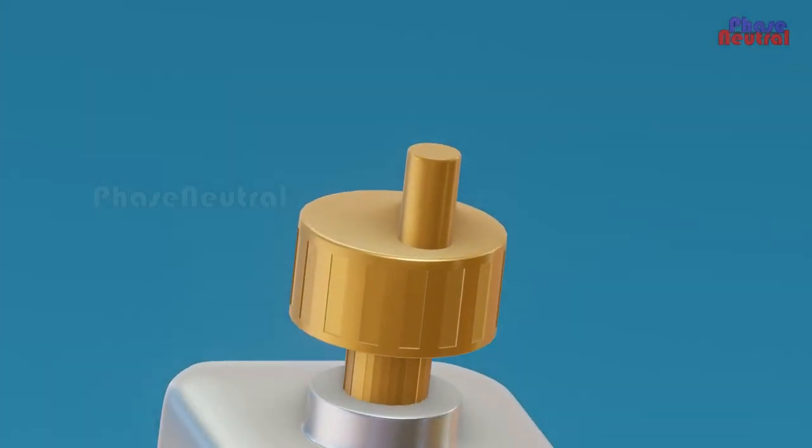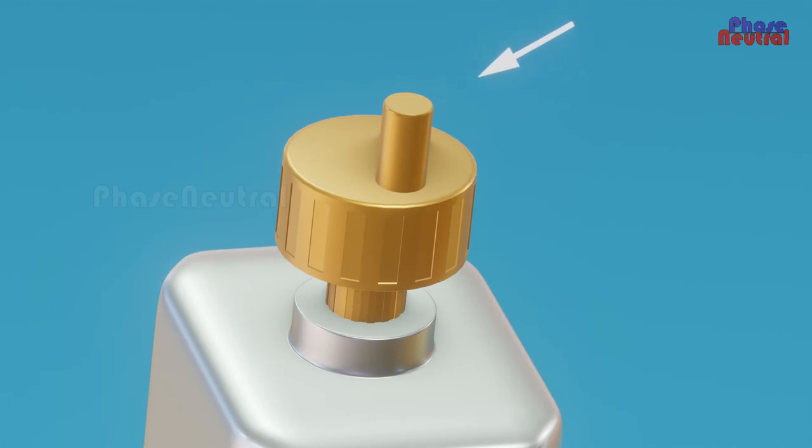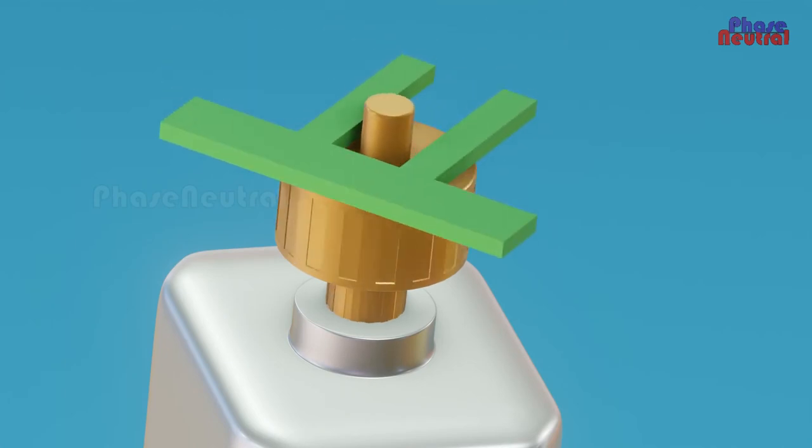The design of the motor shaft is important here. It has a small axis on one side of the shaft, which helps to convert the motor's circular motion to linear motion.